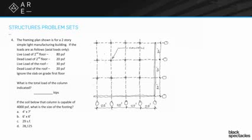So we have two basic questions here. The first one is what is the total load of the column that's been indicated? Well, the first thing that you need to know is that there are all these loads. But the big thing to understand is how does the load even get to the column? So the big keyword is tributary area here.